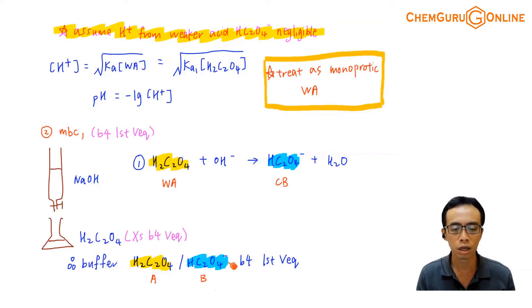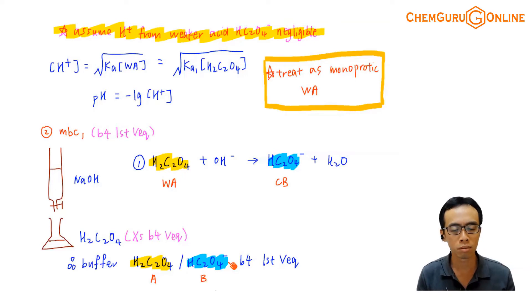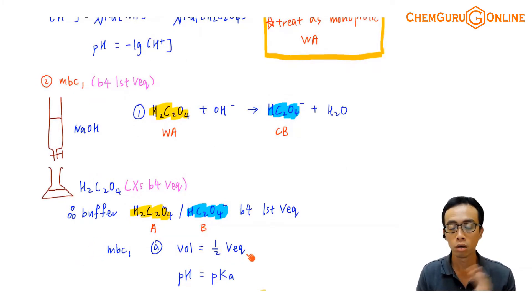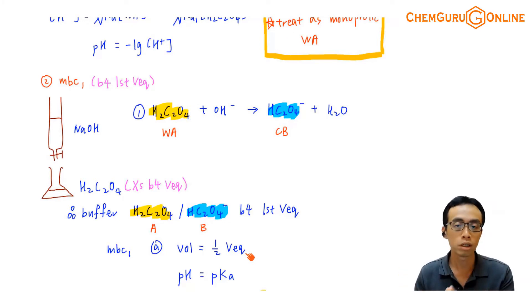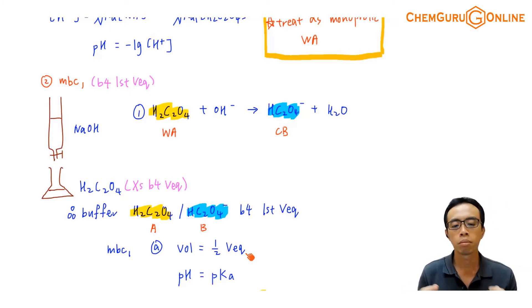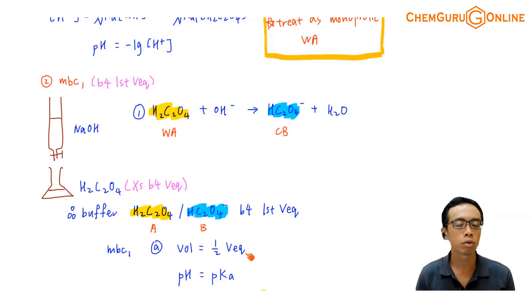So this should be the buffering system, and therefore we will have one point that I can plot for my maximum buffering capacity. If I want to plot the first MBC, the volume is at half equivalence — I know the buffer will be at half VEQ. How about my pH? I know that the pH is equal to pKa, but which pKa value should we use — Ka1 or Ka2?